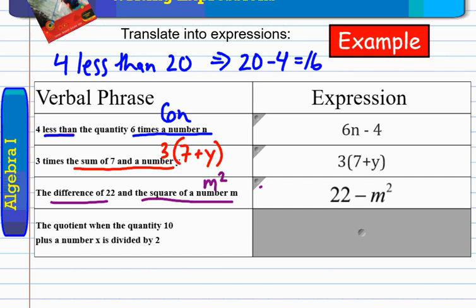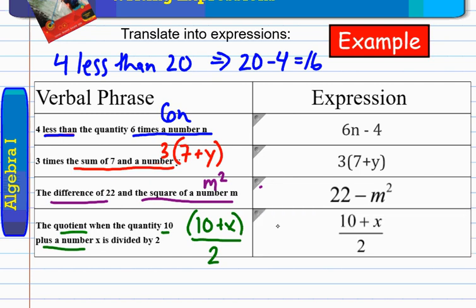Last one, the quotient. Quotient means division. So, the quotient when the quantity, 10. So, when you see quantity, you know the next two items are grouped together. 10 plus a number x. So, we have 10 plus x being divided by, because it says quotient, 2. So, it's going to look like that. You can even put parentheses around this if you want. You don't have to. It's implied. So, there are four examples of translating using English terms and translating it into math.